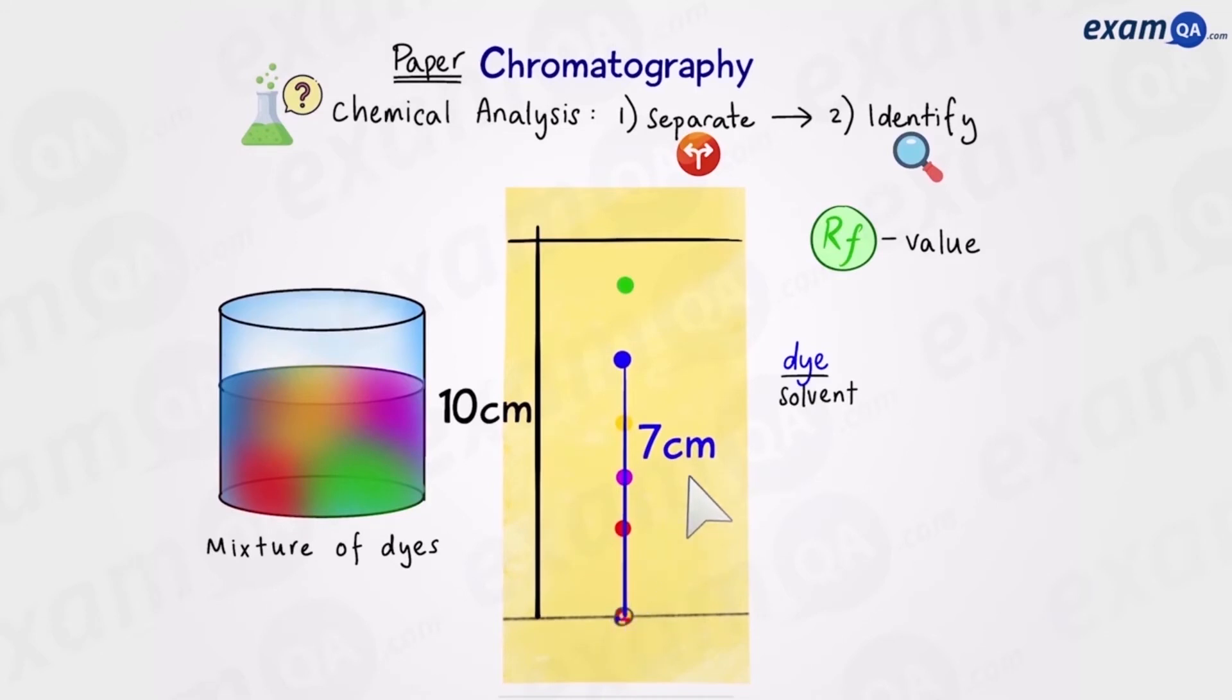Now to work out RF value we're going to divide the distance traveled by the spot or the dye divided by the solvent. In this case we're going to have 7 over 10 centimeters. That's going to give us 0.7. So the RF value for this blue spot is 0.7.